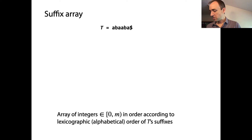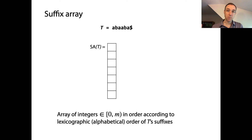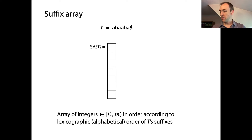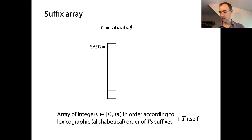We're just putting integers into an array. Those integers represent offsets of suffixes of T, and we're going to write them in alphabetical order. The index is also going to contain T itself. Because the array only contains these offsets, we still need to keep around the actual content of T — so we need to store T and this array of integers.